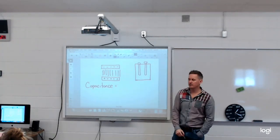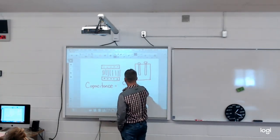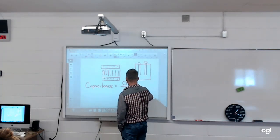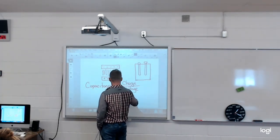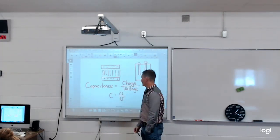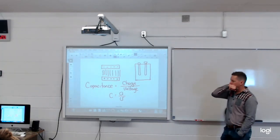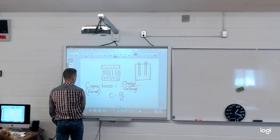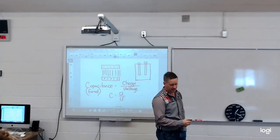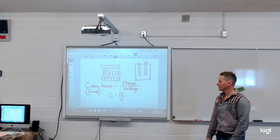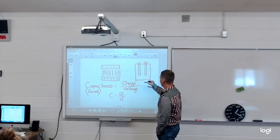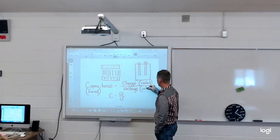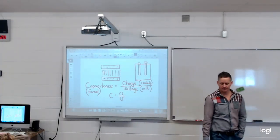So capacitance is essentially the ratio of the amount of charge to the potential difference. C equals Q over V. The units for capacitance is the farad, named after Michael Faraday, a famous physicist.